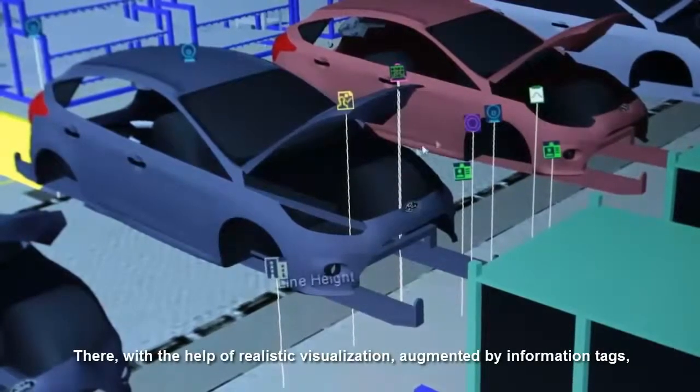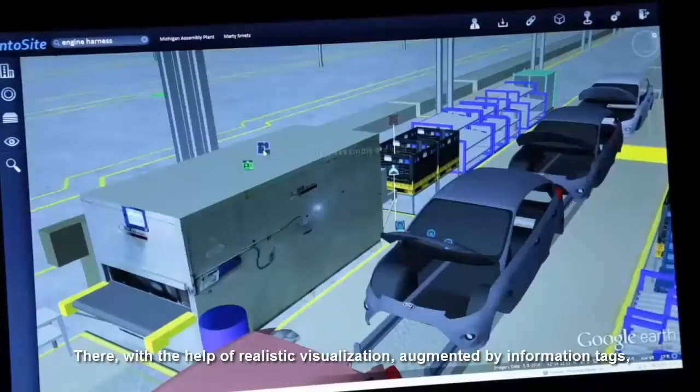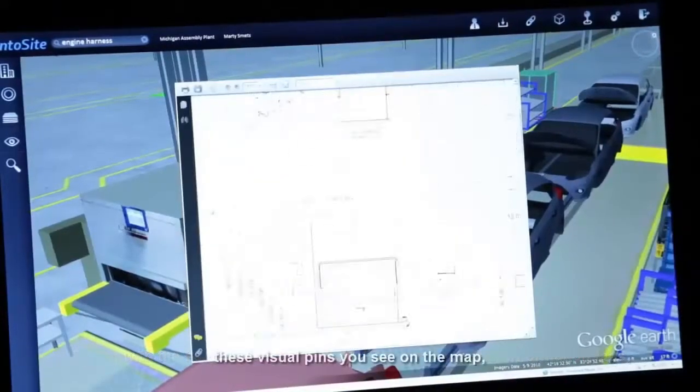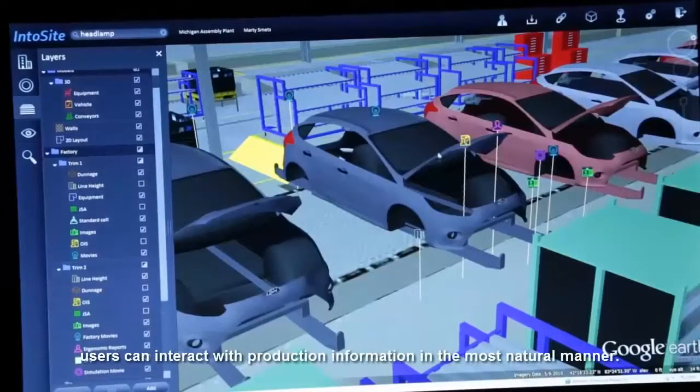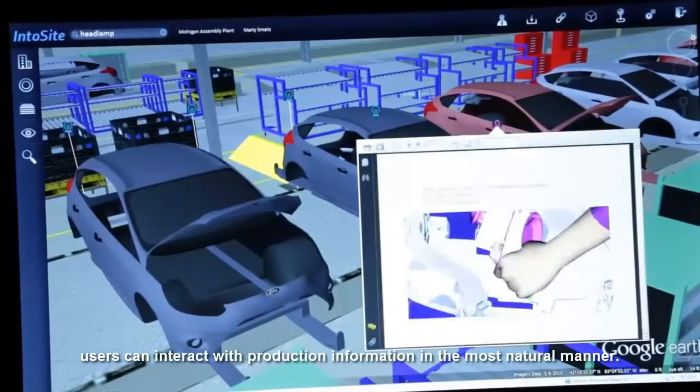There, with the help of realistic visualization augmented by information tags, these virtual pins you see on the map, users can interact with production information in the most natural manner.